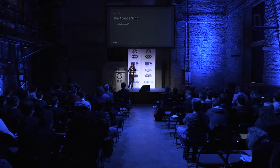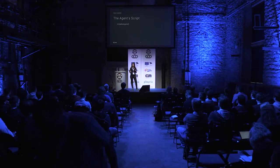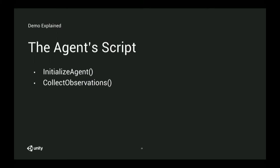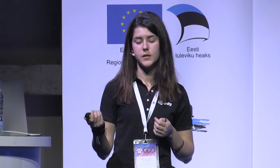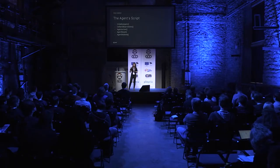The agent script has several functions to implement. Initialize Agent runs only once to set up initialization. Collect Observations is where you gather all the states — everything the agent is aware of. Agent Action contains all agent behavior, for both training and testing, and is where you specify when to reward the agent. Agent Reset and Agent On Done run whenever you decide to reset the agent — they work pretty much the same way.